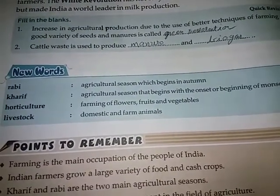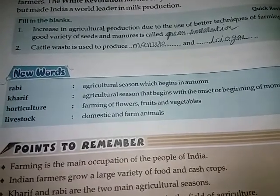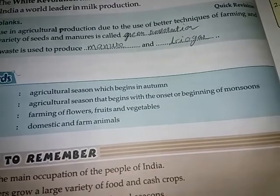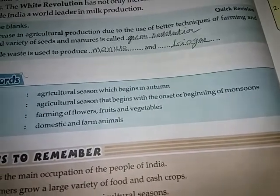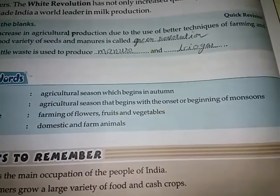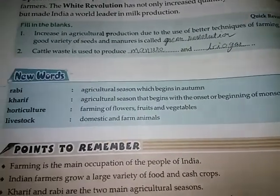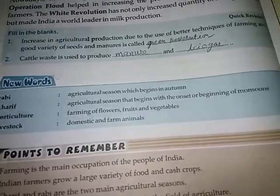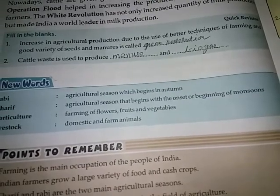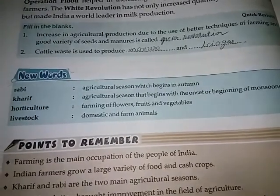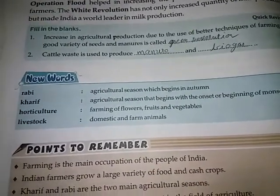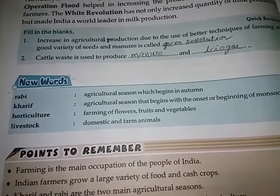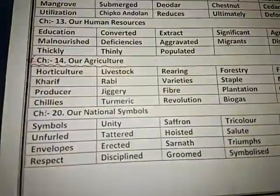Rabi: agricultural season which begins in autumn. Kharif: agricultural season that begins with the onset or beginning of monsoons. Horticulture: farming of flowers, fruits and vegetables. Livestock: domestic and farm animals.